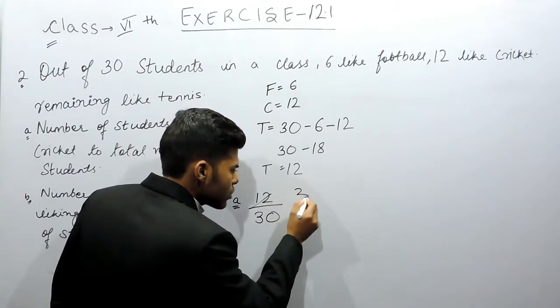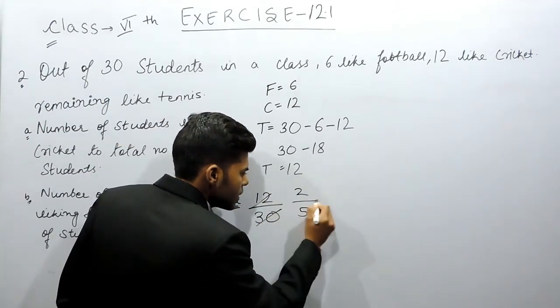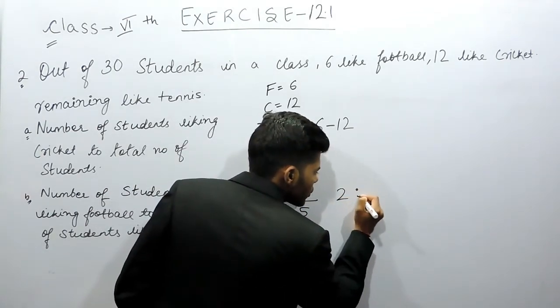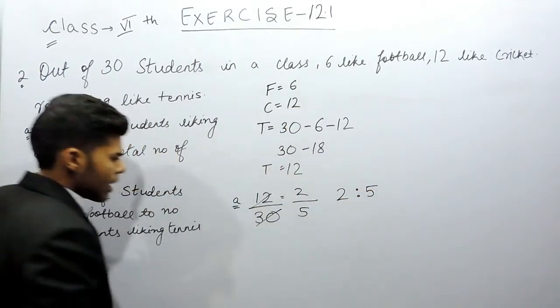So 6, 2 times 12. 6, 5 times 30. So this is 2 by 5. That means 2 ratio 5 is our answer.